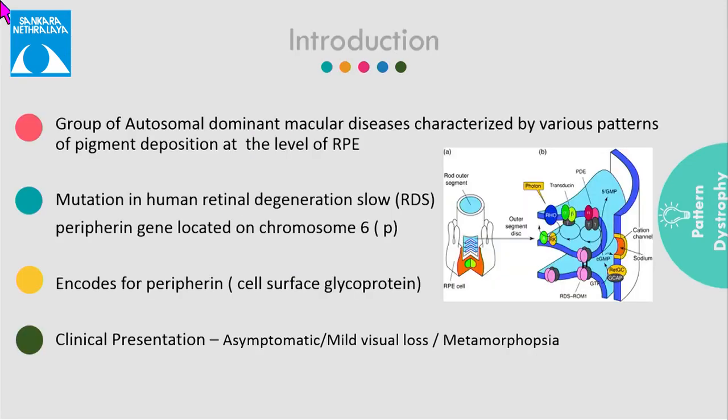Moving on to pattern dystrophy: it is a group of autosomal dominant diseases characterized by deposition of either yellow, orange, or gray pigments in the macular region. It is caused by mutation in the peripherin gene, the product of which helps in the development and maintenance of photoreceptor outer segments.